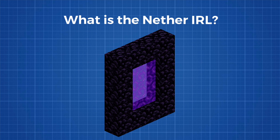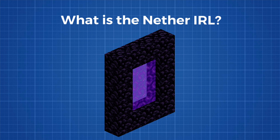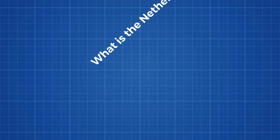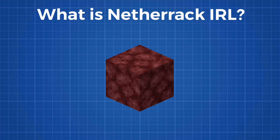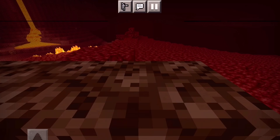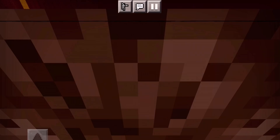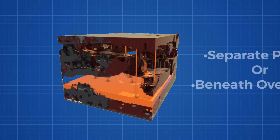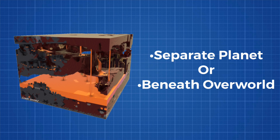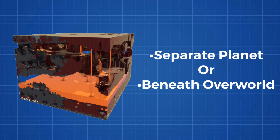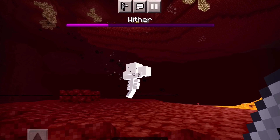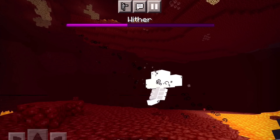What is the Nether in real life, and what is netherrack in real life? There are two main theories about the Nether's shape: it's either a separate planet, or it exists below the overworld. Both have pretty reasonable explanations.